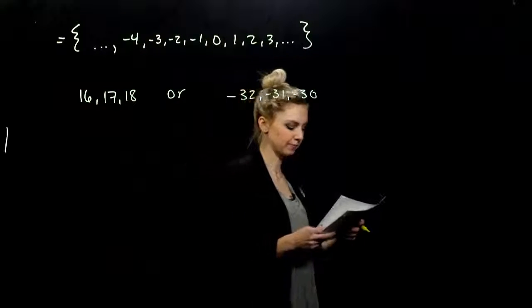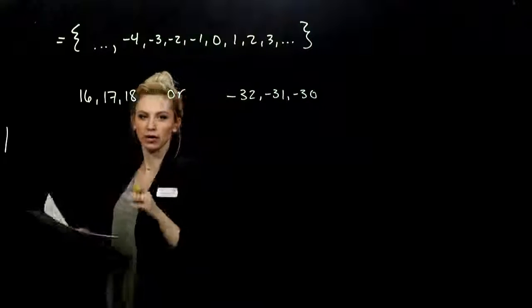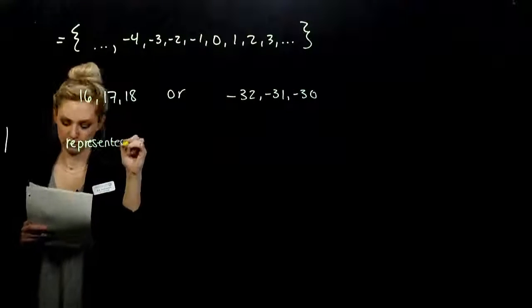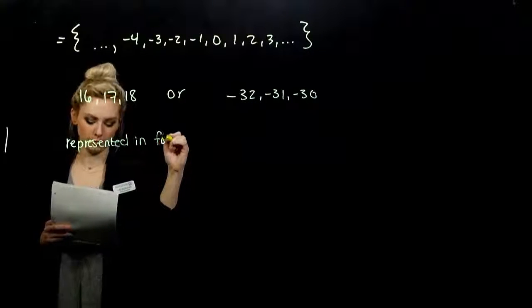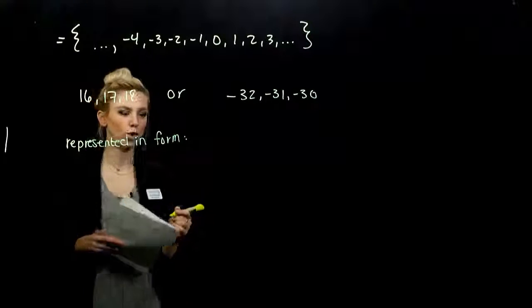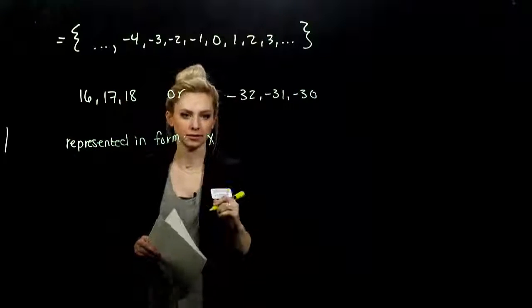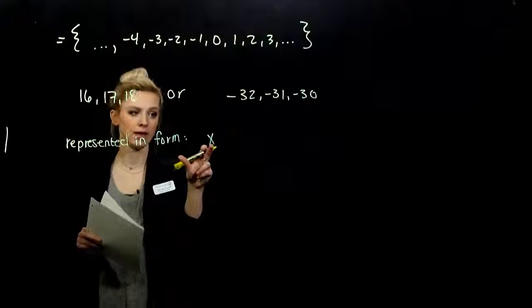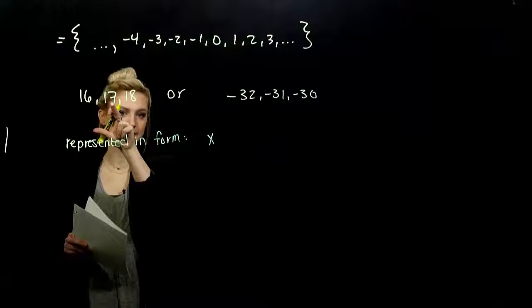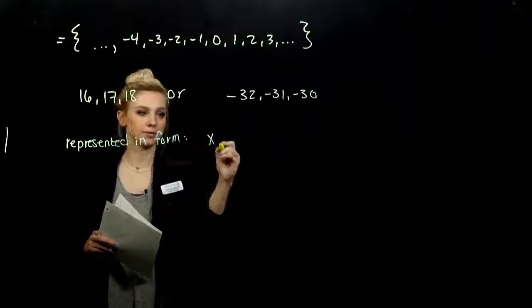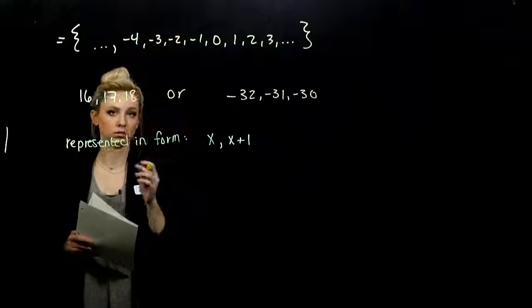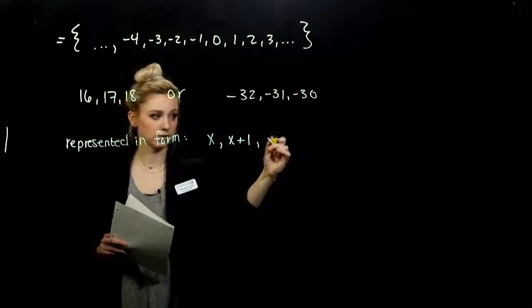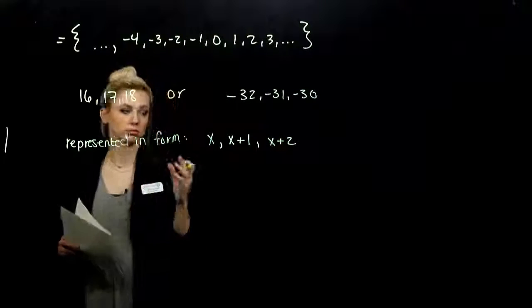So if I want to represent these in a generic form, what is it going to look like? Represented in form. So if I let my first number be x, it's some unknown. It's generic. I can plug in anything I want. I could plug in 16. How do I represent the next consecutive number in terms of x? x plus 1. The next consecutive to this guy would be what? In terms of x: x plus 2. And so on.